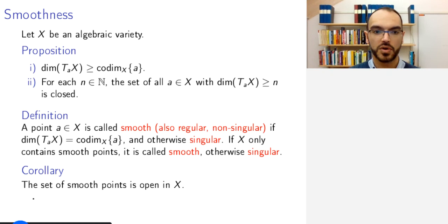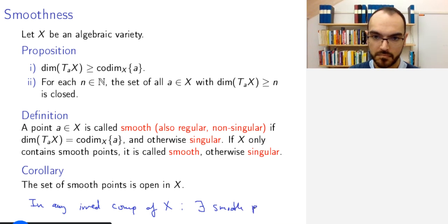In fact, one can show that in any irreducible component of X, there exist smooth points. This means that the set of smooth points in any irreducible component is non-empty, and therefore, because it's open, it is dense. And so therefore, any algebraic variety has a dense open subset of smooth points, which is reassuring. This means that most points are smooth, in some sense, that being smooth is the usual thing, the generic thing, if you wish.